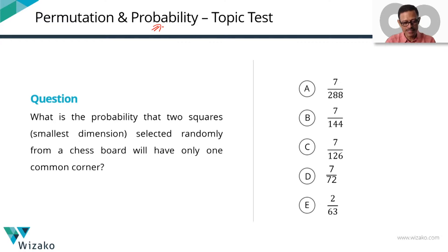What is the probability that two squares — the smallest dimension ones — selected randomly from a chessboard will have only one common corner?